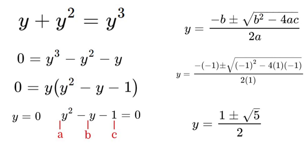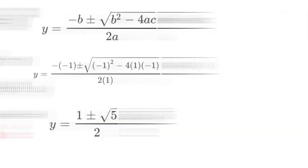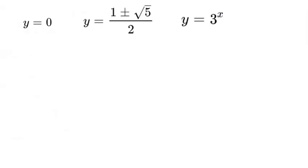So now that we have that, let's get a clean slate here and see what we're working with. So we have solved for y. We know that y is equal to 0 and y is also equal to 1 plus or minus square root of 5 over 2. And originally we substituted y for 3 to the power of x. So now we can replace y with 3 to the power of x.